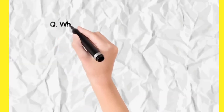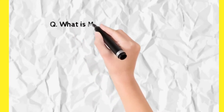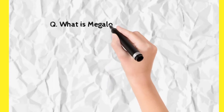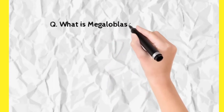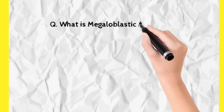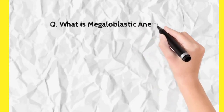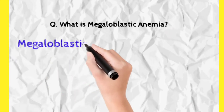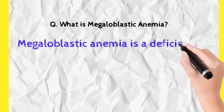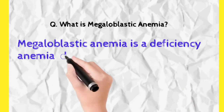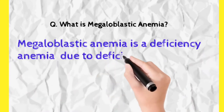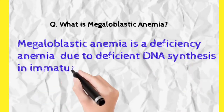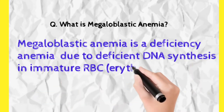Megaloblastic anemia is a kind of anemia where RBC synthesis is deficient. It is the third type of anemia — anemia because of deficiency. It occurs because of deficiency of vitamin B12 and folic acid, which causes impaired DNA maturation and synthesis in RBCs and their progenitors. DNA is a very important part of any cell.